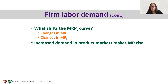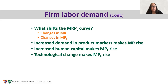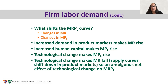Increased demand in product markets makes marginal revenue rise. Increased human capital — the ability of individuals to be more productive — will make the marginal product of labor rise. Things that create human capital such as education, experience, and work make efficiency and productivity rise. Technological change can also make the marginal product of labor rise as we come up with more efficient ways to do things, shifting the labor demand curve to the right. But on the flip side, technological change will also make prices and marginal revenue fall in product markets, so there's an ambiguous net effect on firm labor demand.